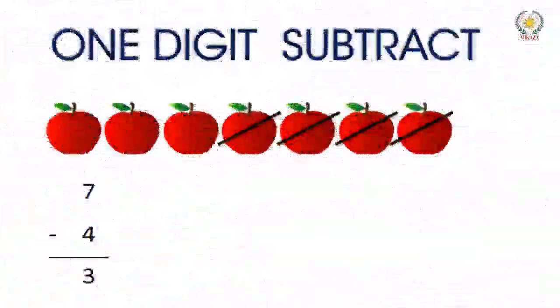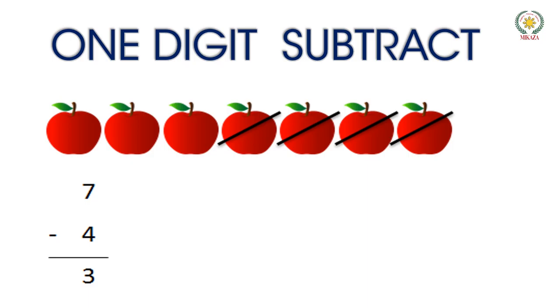5 minus 3. Now we have 5 apples. This means that we take away 3 apples. So we have answer 2. 5 minus 3 is equal to 2.